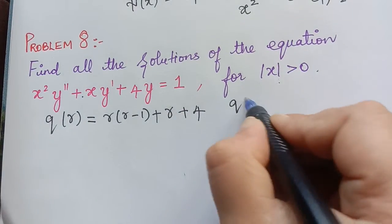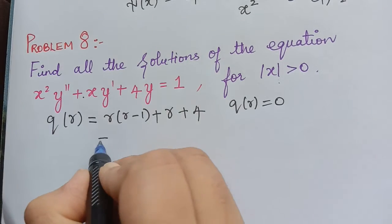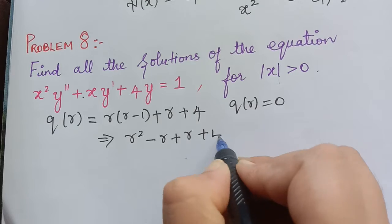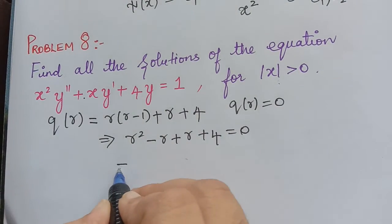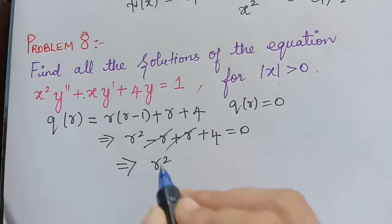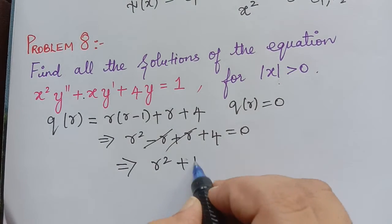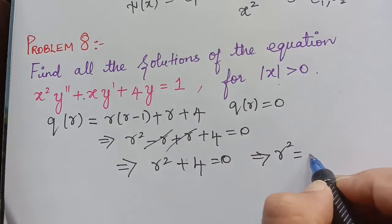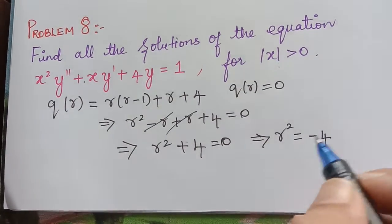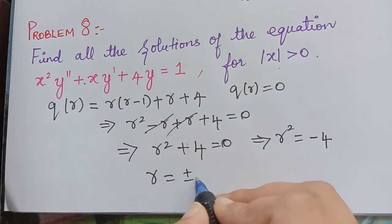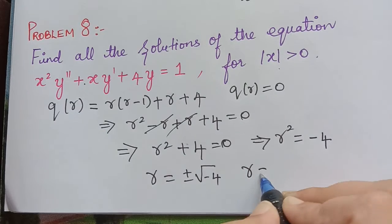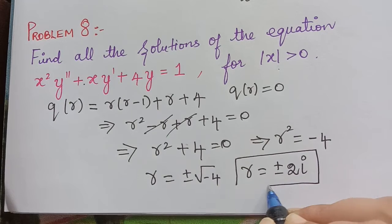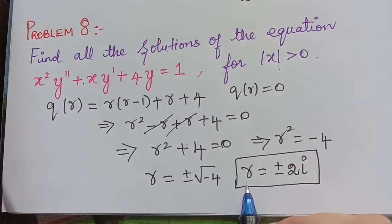We write the indicial polynomial q(r) = 0: r(r - 1) + ar + b = r(r - 1) + r + 4 = 0, with a = 1 and b = 4. Expanding, r squared minus r plus r plus 4 equals 0; the middle terms cancel, giving r squared plus 4 equals 0, so r squared equals negative 4, and r equals plus or minus 2i — imaginary roots.